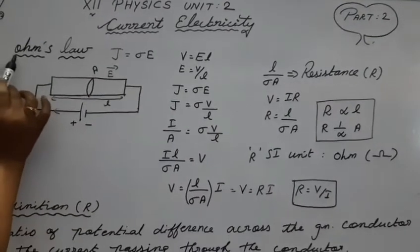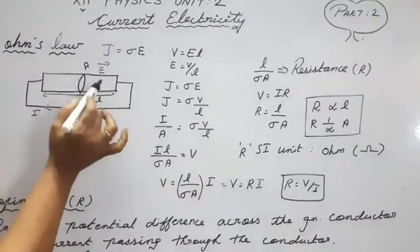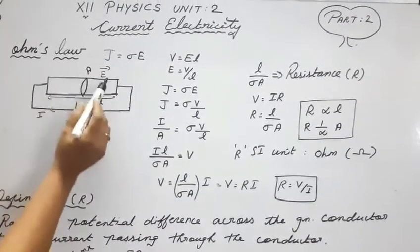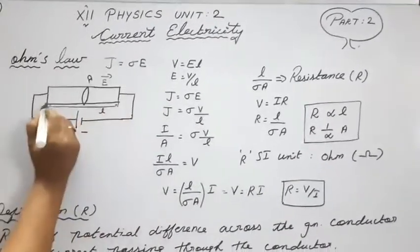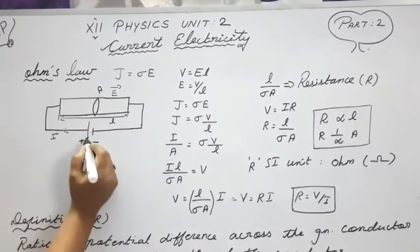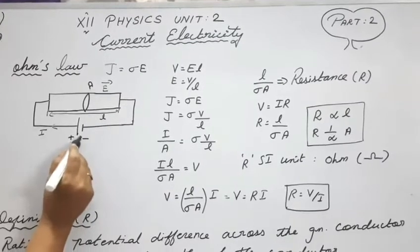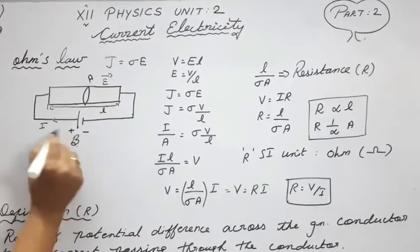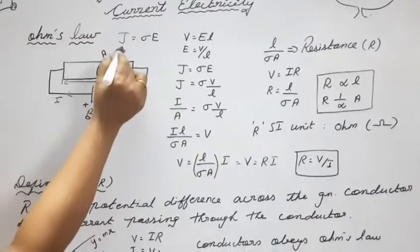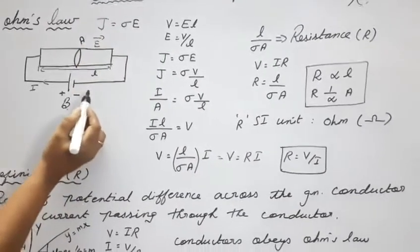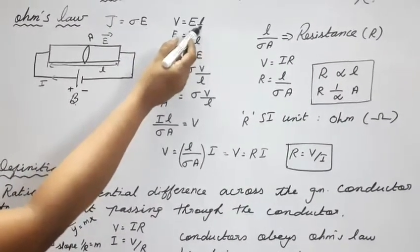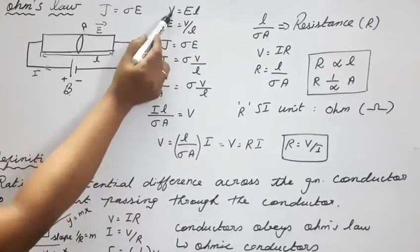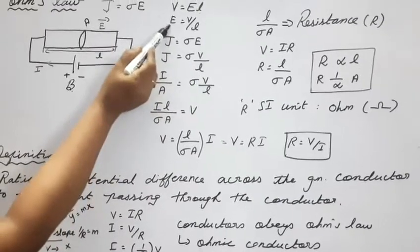The next topic is Ohm's law. We consider a wire of cross-sectional area A and length l, with a potential difference connected — positive on one side and negative on the other. We already know that current density J = σE, and voltage V = E·l, therefore E = V/l. Substituting, J = σ · (V/l).